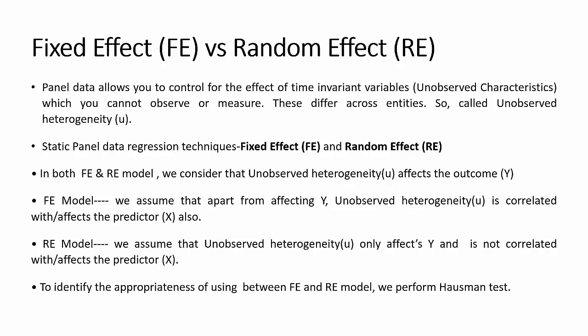Panel data allows you to control for the effect of time-invariant variables, which we call unobserved characteristics — things you cannot observe or measure, for example cultural differences. These unobserved characteristics may differ across entities such as individuals, countries, or regions. This is called unobserved heterogeneity, and it can be addressed by using the fixed effect or random effect model.